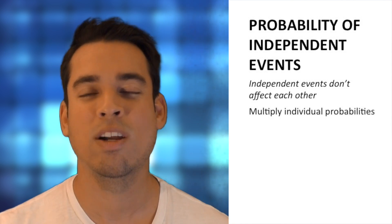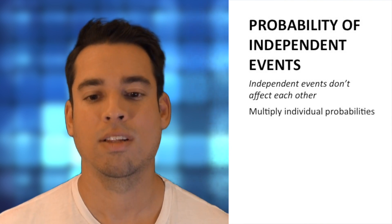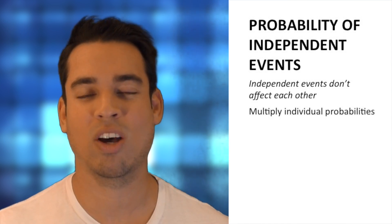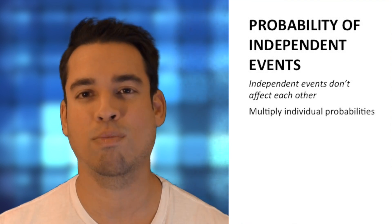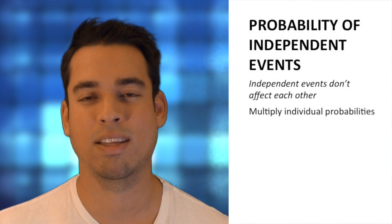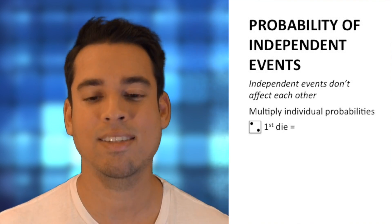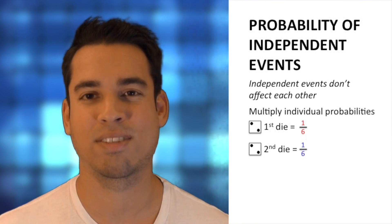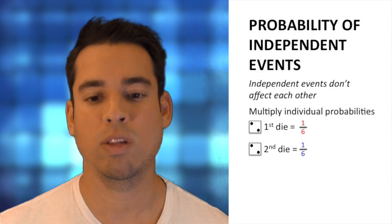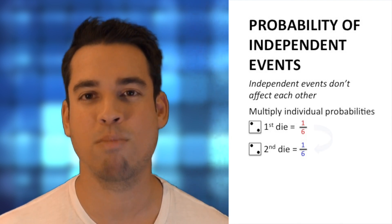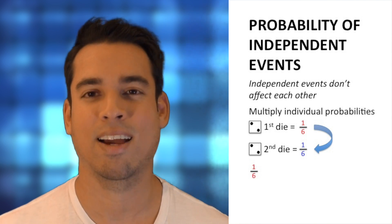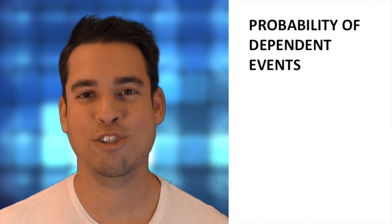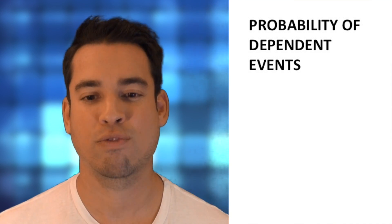What is the probability of rolling a two two times in a row? Rolling a two on the first roll has no bearing on whether you'll roll a two on the second roll. The probability of rolling a two on the first roll is one out of six, and on the second roll it's also one out of six. So we multiply them: one-sixth times one-sixth gives us a probability of one out of 36.